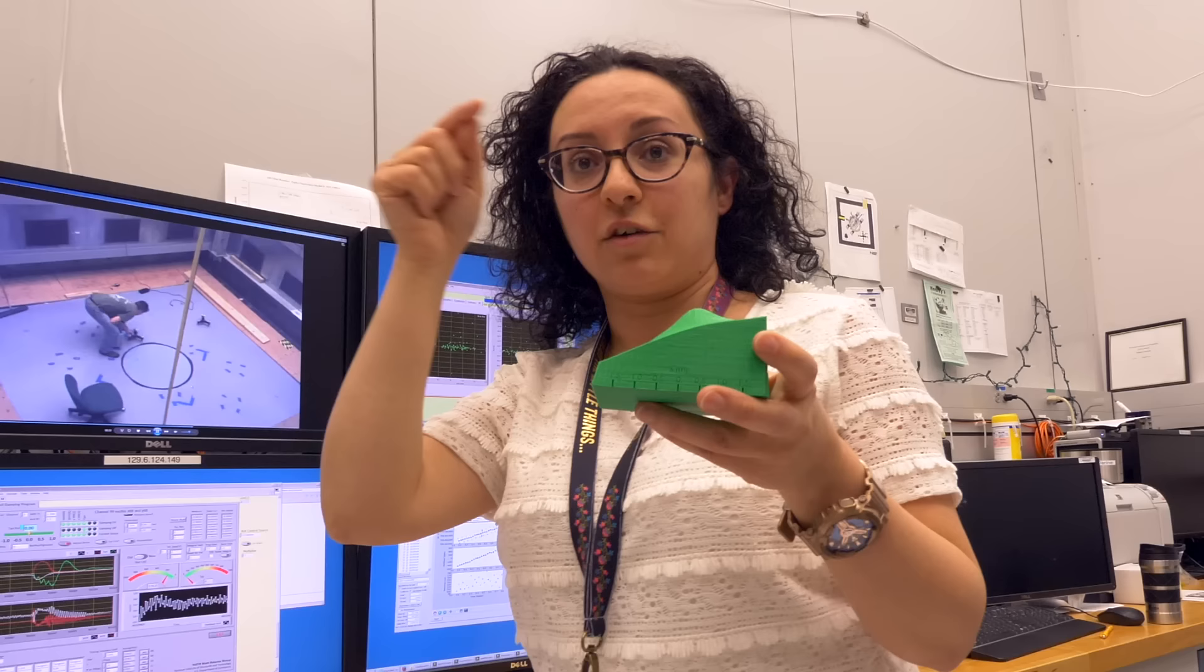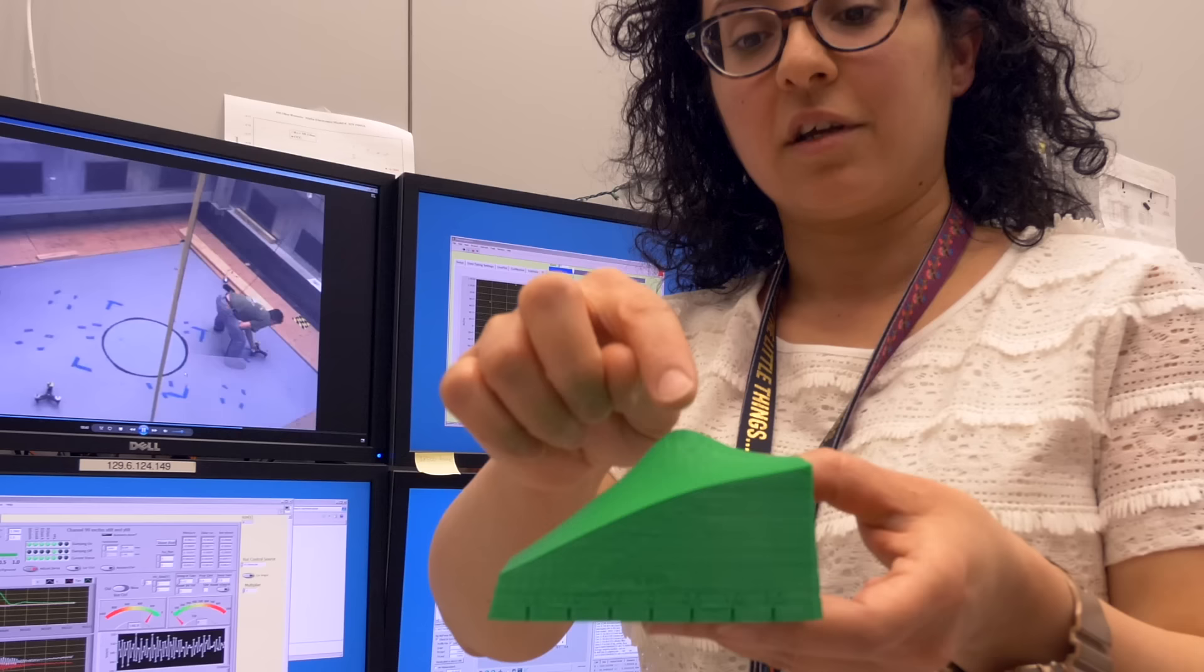This is a 3D printed map of the acceleration due to gravity in the kibble balance room. The bump is due to the mass of the powerful and very heavy permanent magnet that's in the balance. The acceleration due to gravity must continually be measured, because it can be affected at this level of precision by the positions of the sun and moon, and even the water table underneath the building.